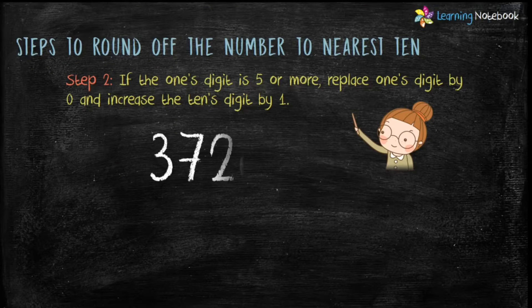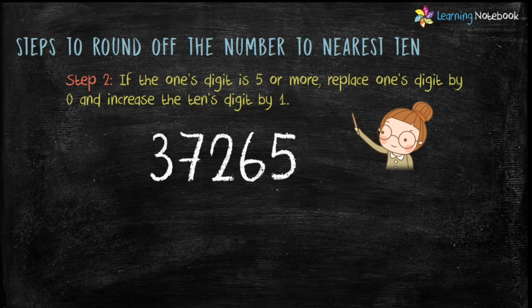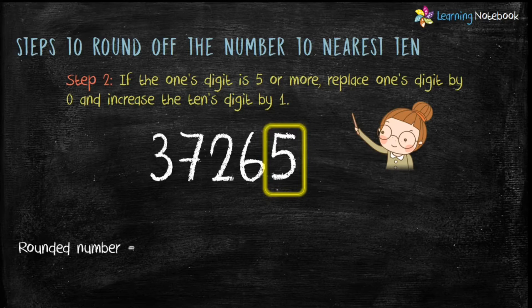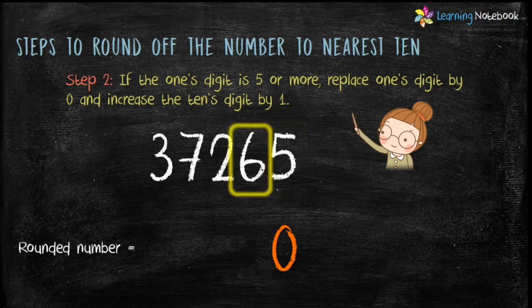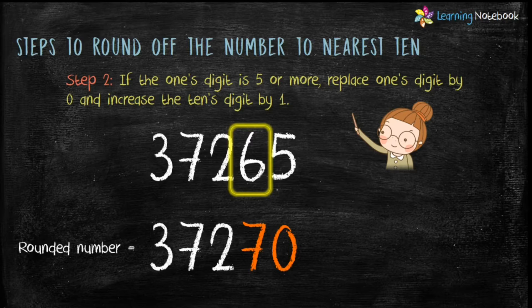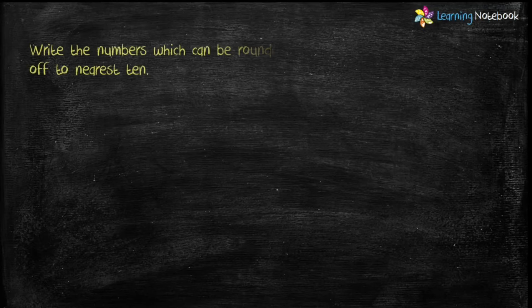Let's take another example: 37265. Here the one's digit is 5. First replace 5 by 0, then increase the tens digit, which is 6, by 1. Therefore the rounded number is 37270.